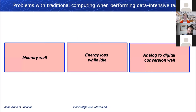I don't need to dwell too long on the problems with traditional computing when performing data-intensive tasks. In this community we're well aware that there is a memory wall between compute and memory access, a lot of energy loss while idle, and a large wall between analog and digital conversion. These motivate why we're very interested in new computing paradigms such as neuromorphic, quantum computing, and unconventional computing.